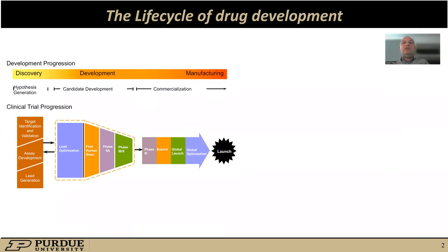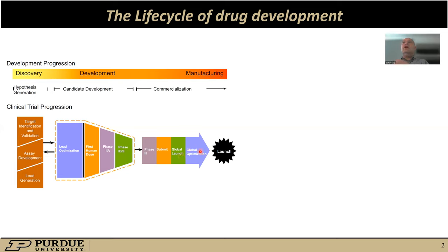If you look at the general development phases for pharmaceutical compounds, there are many important steps which need to be followed in a sequential way before we can take a drug from discovery to manufacturing. First, we start by generating the hypothesis of how a particular chemical structure may interact with a disease and therefore provide the potential beneficial effect — a cure. Then the target needs to be identified and validated, some assay developed, and then generate some lead compounds which can then go into the clinical trials. During the development phase we need to perform some optimization to design the human dose, going into the phases for clinical trials, then submission, the global launch, and after that the global optimization before the actual launch happens.